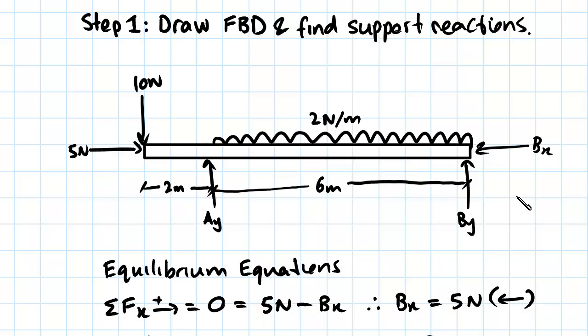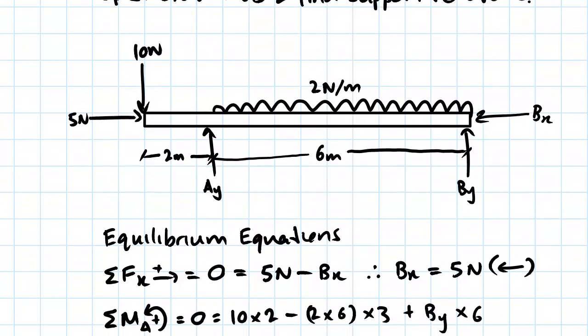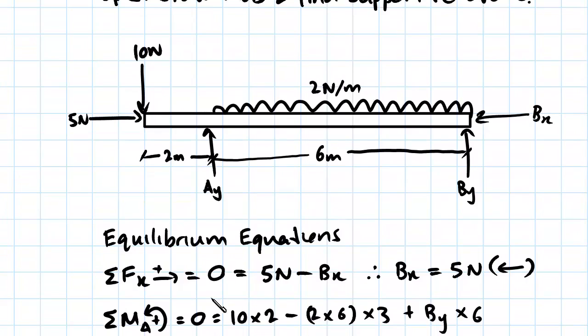Our next step will be to solve for a moment to isolate one of the forces. We'll take the moment about A and set that equal to zero. We have this 10 Newton force acting at a lever arm of 2 meters from A, causing a positive anti-clockwise rotation. Then we have this UDL with a magnitude of 2 times 6, and its lever arm is half this distance which is 3 meters, causing a negative rotation. The last force which will contribute a moment is By multiplied by the lever arm.